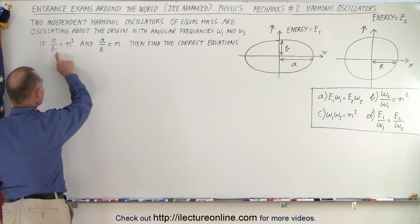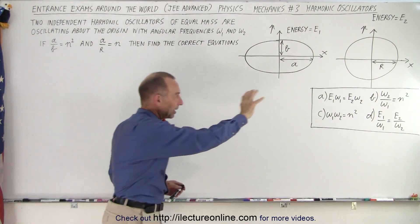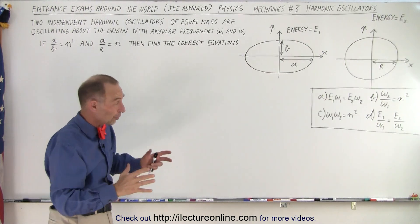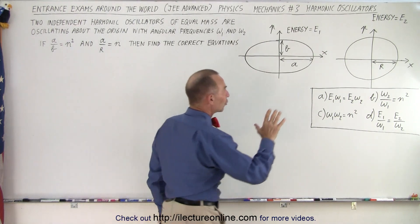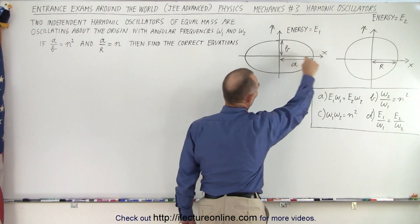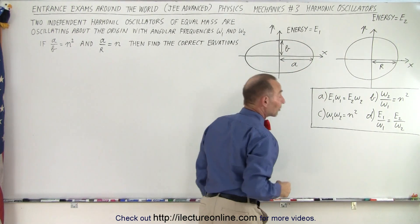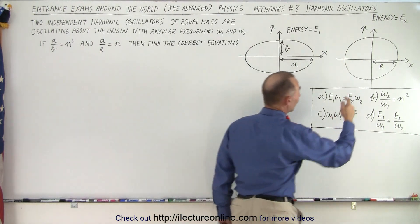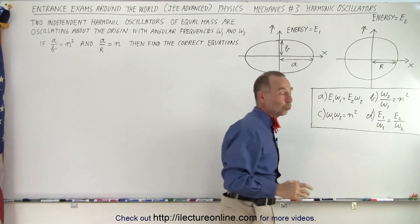They tell us that the ratio a over b equals n squared and a over r equals n. We need to find the correct equations from four given options — one or more could be correct. They've given us a graph of the two oscillators. On the horizontal axis is displacement from the origin, so the maximum displacement is a, and on the vertical axis is momentum, with maximum momentum equal to b. The second oscillator has maximum displacement r and maximum momentum also equal to r.